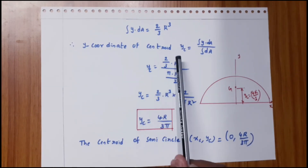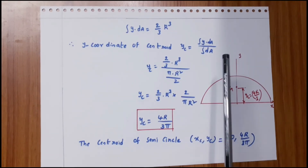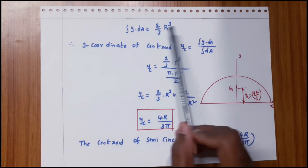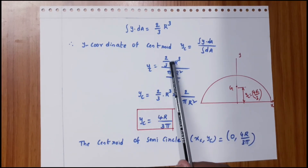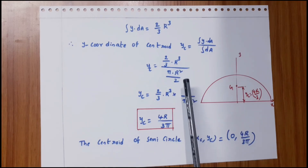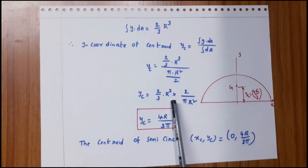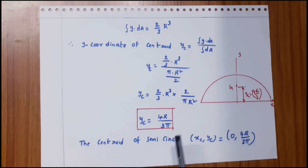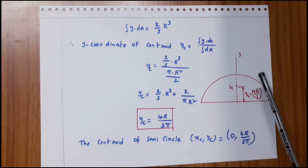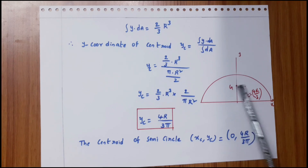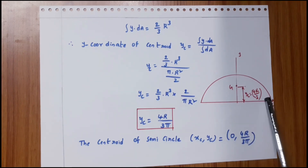The y-coordinate of the centroid is yc = ∫y·dA / ∫dA = (2/3)r³ ÷ (πr²/2) = (2/3)r³ × (2/πr²) = 4r/3π. Therefore the centroid of the semicircle is at (xc, yc) = (0, 4r/3π), located at a distance yc = 4r/3π from the x-axis.